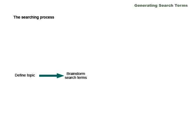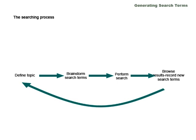Before we get to specifics, let's look at a brief overview of the searching process. First, you define your topic. Next, you brainstorm search terms. Then, you perform your search. And next, you can browse results and record new search terms. These new search terms may help you to further define your topic. Notice that the process is dynamic and ongoing — as you search, you may add to your search terms list, and your topic may develop and change.